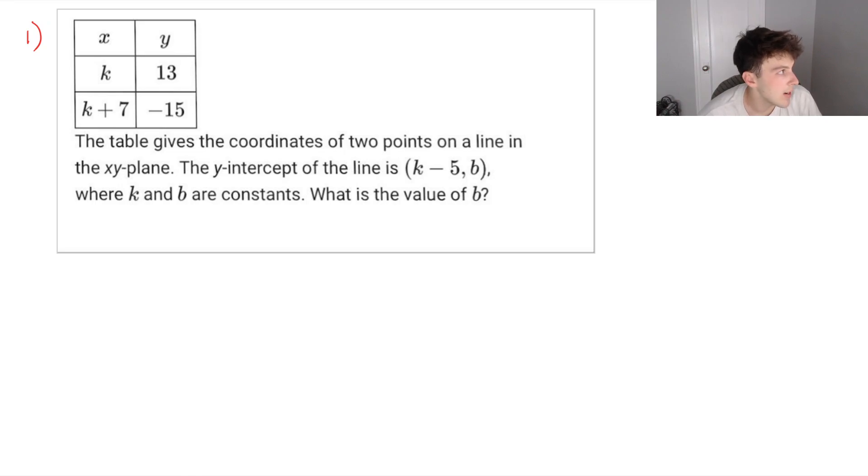So we have a line on the xy Cartesian plane, and it tells us that the y-intercept of the line is at k minus 5 as our x value and y value of b, where k and b are constants. So what is the value of b, it's asking.